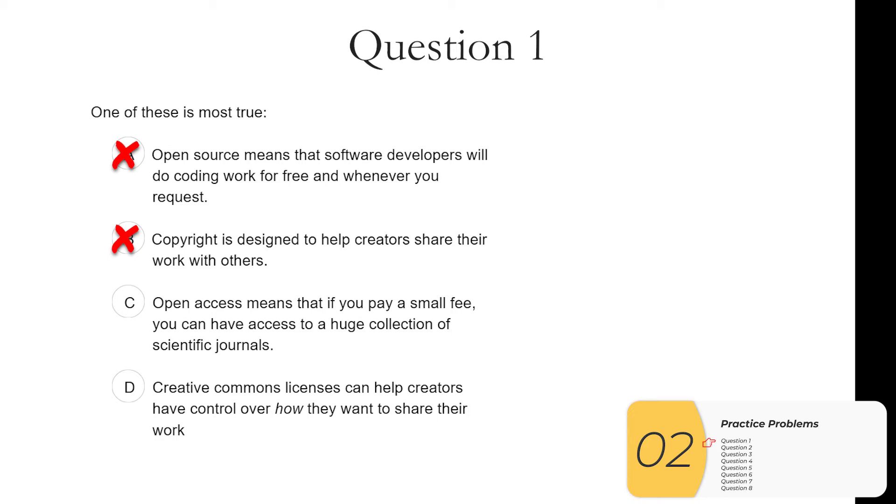C. Open access means that if you pay a small fee, you can have access to a huge collection of scientific journals. This is definitely not true. Open access means that you have open access, open and free access to scientific research. So D is true. Creative Commons licenses can help creators have control over how they want to share their work. As you saw from before, you can share requiring attribution only. You can share it saying you can share it, but no mixing. A whole lot of different ways. Creative Commons gives you fine grain control over how you share.